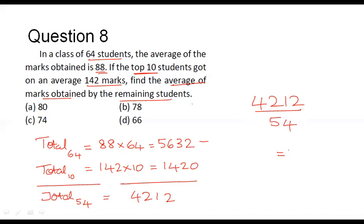How much does this value come to? It comes to 78. Looking at the options here, option b reads 78, and that will be the final answer for this question.